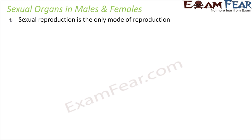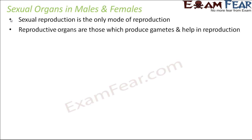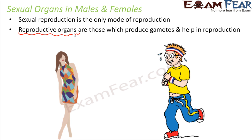Because in the case of human beings, sexual reproduction is the only mode of reproduction. So which are the parts which take part in the process of reproduction? They are called reproductive organs. If you talk about a female, which is the primary reproductive organ in a female?